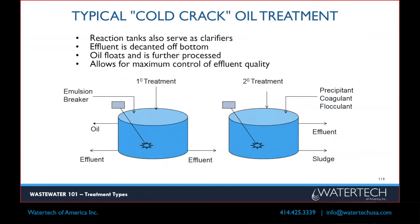A lot of you guys know how to do this. We're talking about batch treatment. Sometimes we'll use an emulsion breaker, sometimes we'll use acid. We're trying to float the oil up, get it off, and have the effluent come off the bottom. In a lot of cases there are metals in there also, so you need to use a metal precipitant. You would treat on the left-hand side with your emulsion breaker, get the clear water off, suck it off and put it in the second treatment tank, and then treat it for heavy metals. Depending upon what it is, you would use a certain pH. Then your sludge would go through a press or some kind of dewatering device.